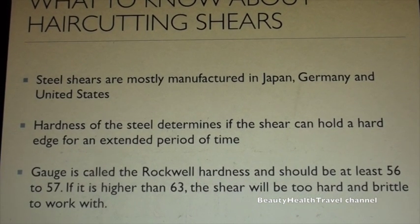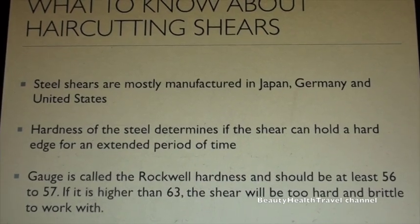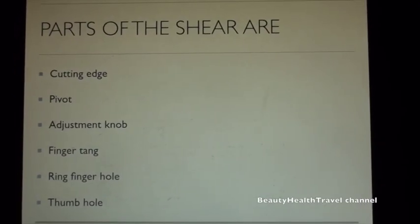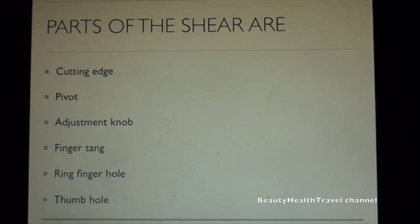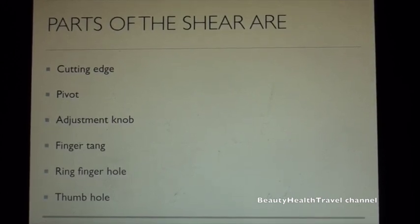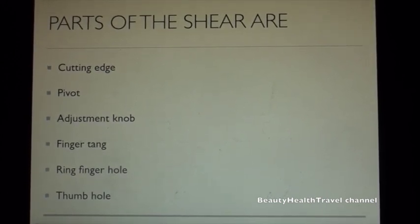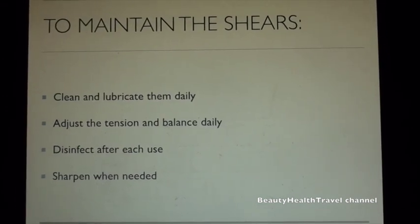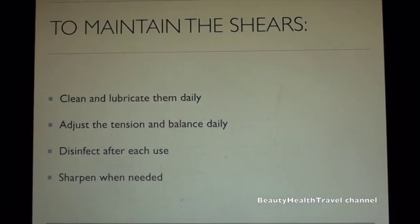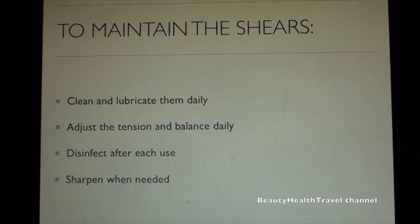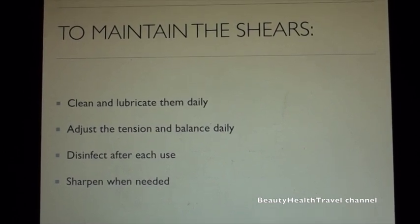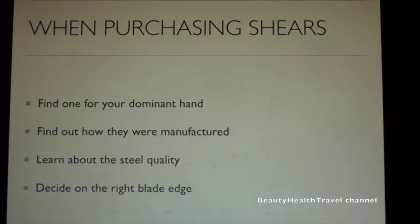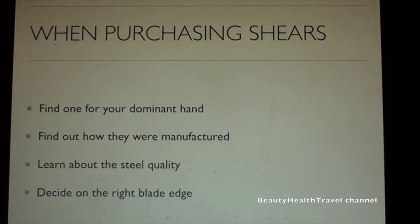Parts of the shear are cutting edge, pivot, adjustment knob, finger tang, ring finger hole, and thumb hole. To maintain the shears: clean and lubricate them daily, adjust the tension and balance daily, disinfect after each use, and sharpen when needed.